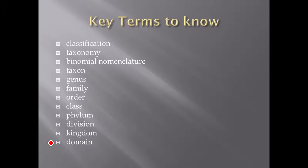And that's pretty much it, guys — that's the basics of classification. Here are the key terms you should know from this lesson. When you create your Cornell notes, you want to look at these key terms to help you. You can use your book or Google to help you find the definitions. Just make sure that you write them in your own words, because it's always better to write things in your own words — it helps you remember what these things mean.